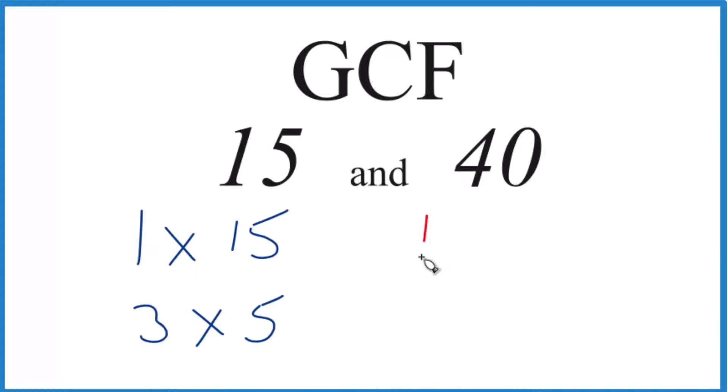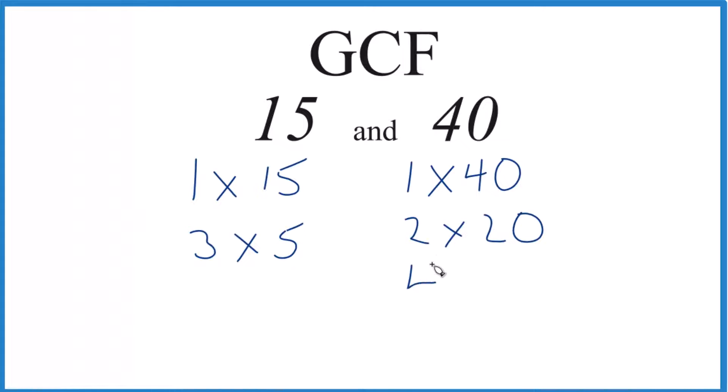For 40, we have 1 times 40, 2 times 20, and then 4 times 10, that equals 40, and 5 times 8. Those are the factors of 40.